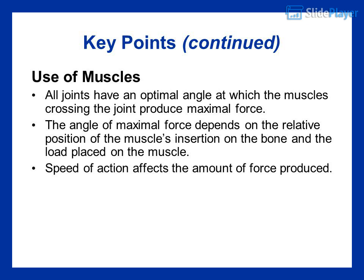All joints have an optimal angle at which the muscles crossing the joint produce maximal force. The angle of maximal force depends on the relative position of the muscle's insertion on the bone and the load placed on the muscle.